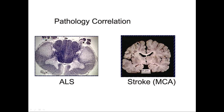This is a stroke. A stroke of the middle cerebral artery can wipe out area 4 of the precentral gyrus, causing upper motor neuron signs on the opposite side of the body, because these axons cross in the pyramids.